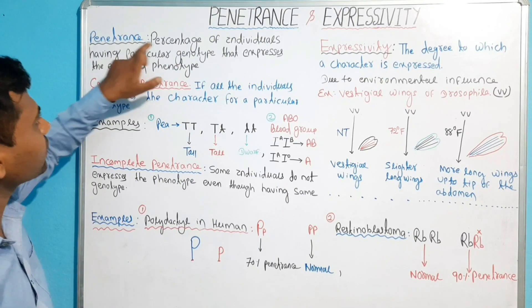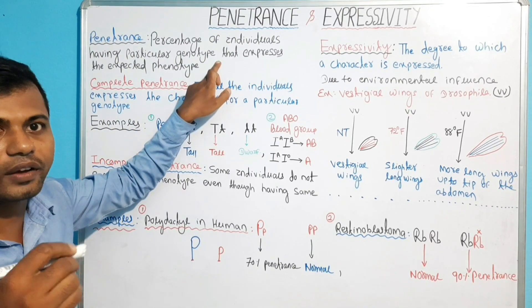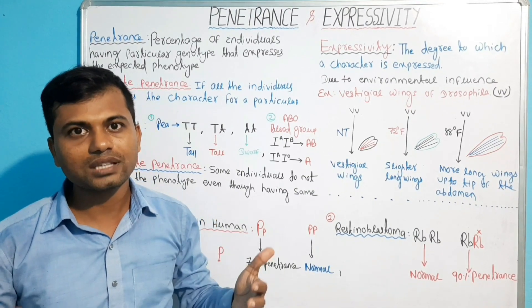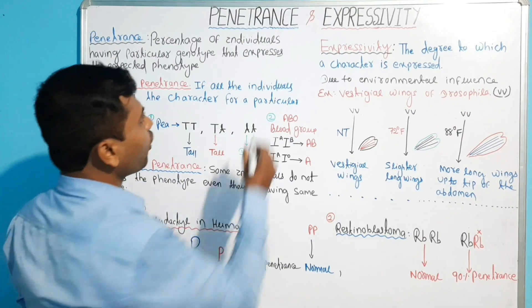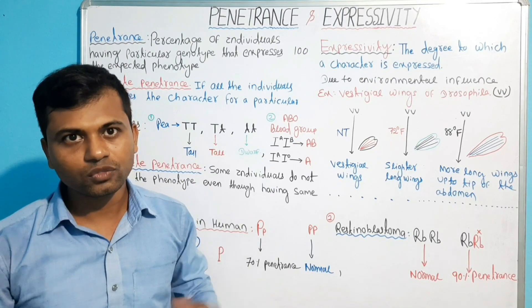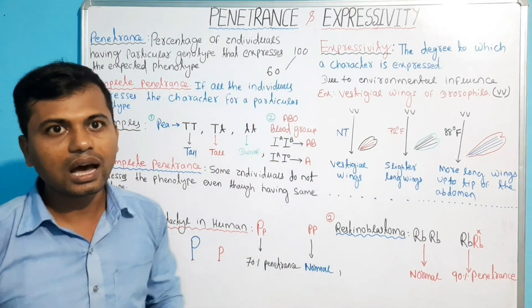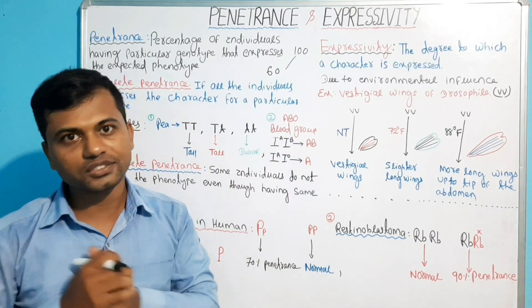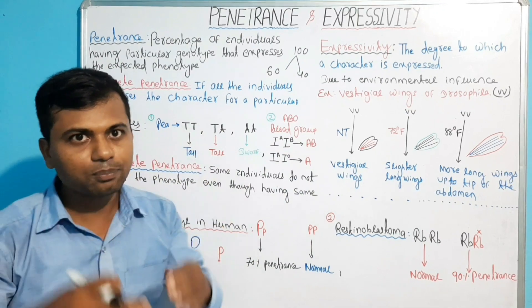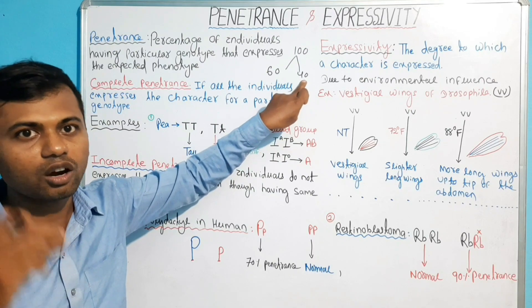Penetrance refers to the percentage of individuals having a particular genotype that expresses the expected phenotype. We will explain this by taking the example of a disease known as diabetes. Suppose there are 100 persons who have the genotype for diabetes, but out of those 100 persons, only 60 are showing symptoms or suffering from the disease. The other 40 individuals do not show any symptoms or disease, though they carry the gene for diabetes.